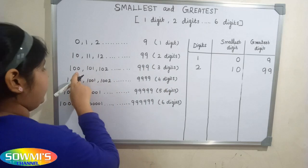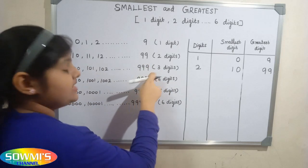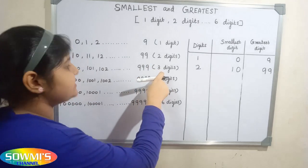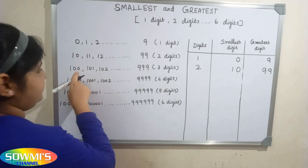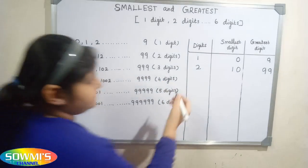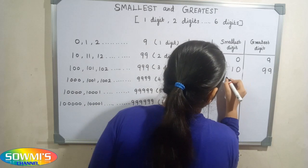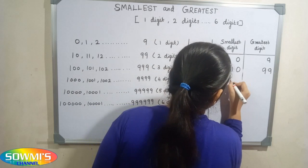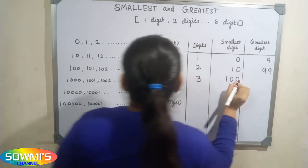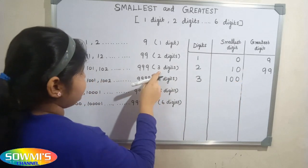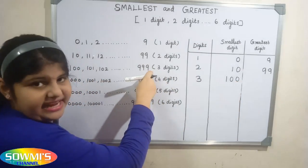Three digit number starts with 100 and ends in 999. So the smallest three digit number is 100, and the greatest three digit number is nine hundred and ninety-nine.